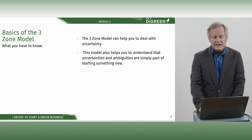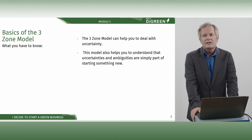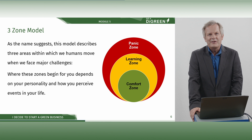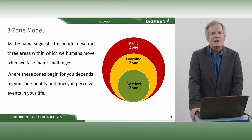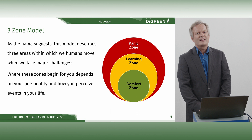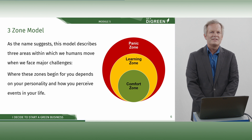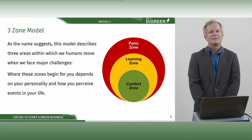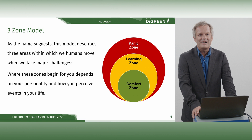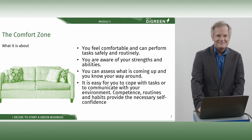The three-zone model can help you to deal with uncertainty. This model also helps you to understand that uncertainties and ambiguities are simply part of starting something new. Our first model deals with exactly this topic. It is called the three-zone model and was originally developed by Juergen Dodson. This model describes three areas within which we humans move when we face major challenges. Where these zones begin for you depends on your personality and how you perceive events in your life. We cannot avoid the three zones if we want to learn, develop professionally, or grow beyond ourselves. Not for nothing does the saying go: who dares, wins.